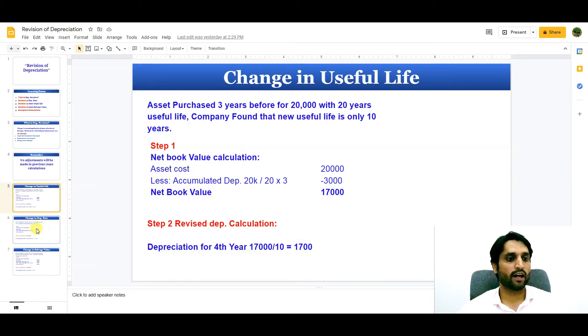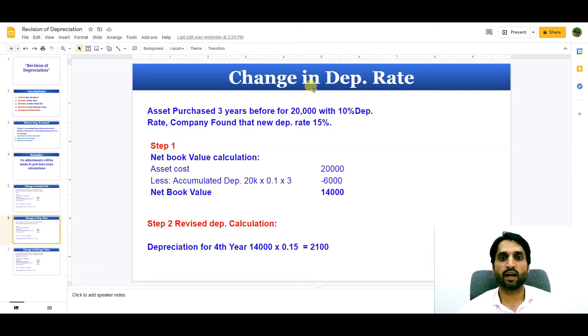Now let's move ahead and see if the change happens in depreciation rate. Assets purchased three years before for 20,000 with 10% depreciation each year. Company found that new depreciation rate will be 15%, not 10%. The rate has increased.